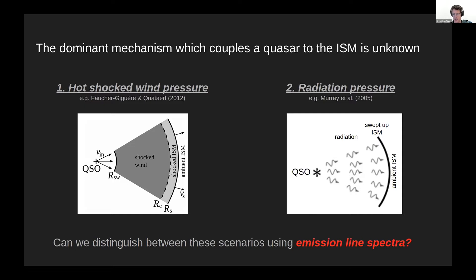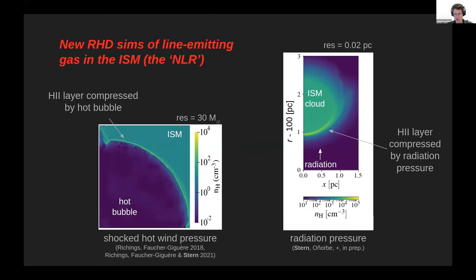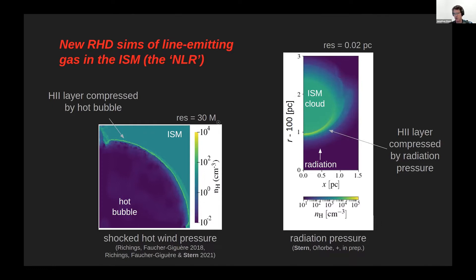What I want to suggest is that maybe we can use observations to understand which coupling mechanism is dominant, and specifically that this can be done using emission line spectra. To answer this question, we've developed new radiation hydrodynamic simulations of line-emitting gas in the host ISM of AGN — also known as the narrow line region or NLR — simulating the gas under different assumptions about the dominant feedback mechanism.